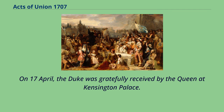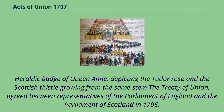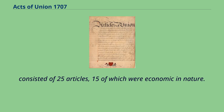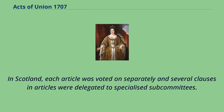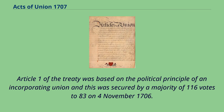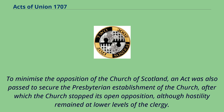The Treaty of Union, agreed between representatives of the Parliament of England and the Parliament of Scotland in 1706, consisted of 25 articles, 15 of which were economic in nature. In Scotland, each article was voted on separately and several clauses were delegated to specialized subcommittees. Article 1 of the Treaty was based on the political principle of an incorporating union, secured by a majority of 116 votes to 83 on November 4, 1706. To minimise the opposition of the Church of Scotland, an act was also passed to secure the Presbyterian establishment of the Church, after which the Church stopped its open opposition, although hostility remained at lower levels of the clergy.